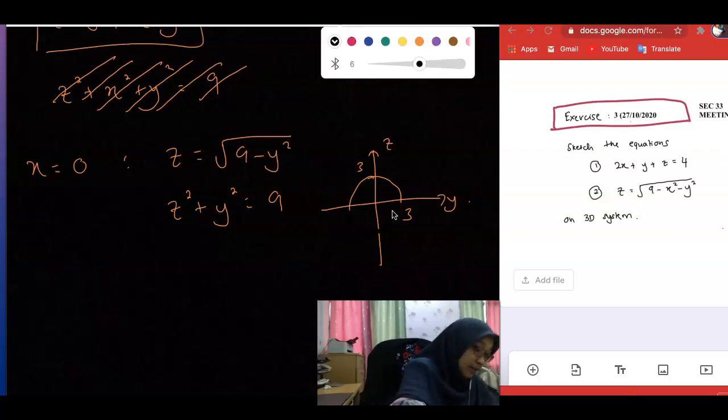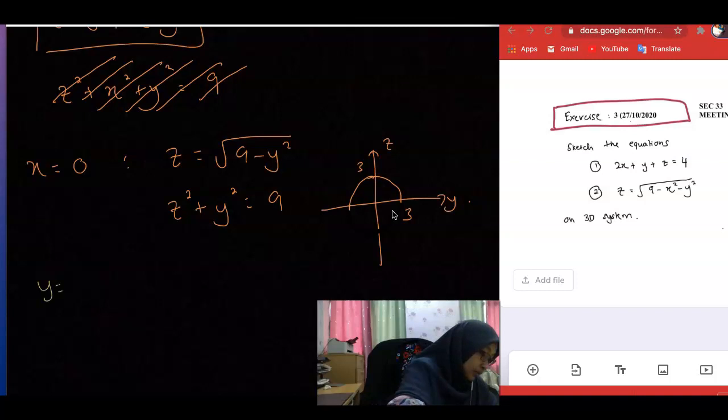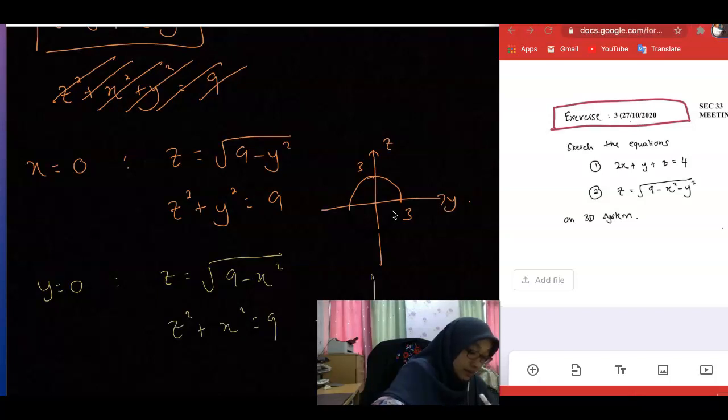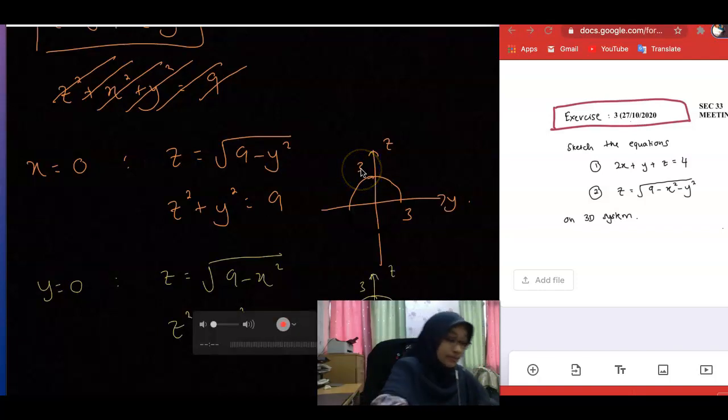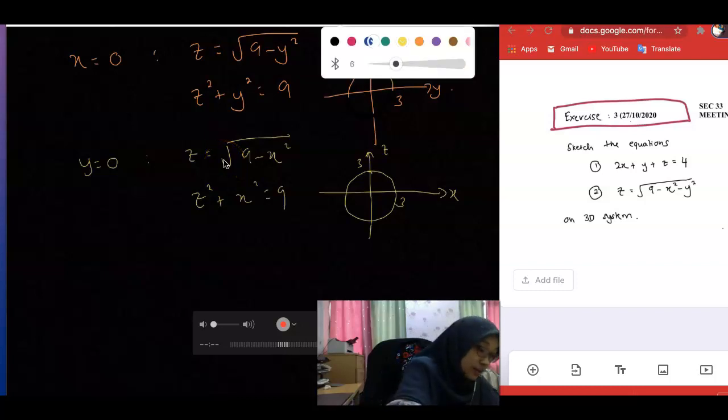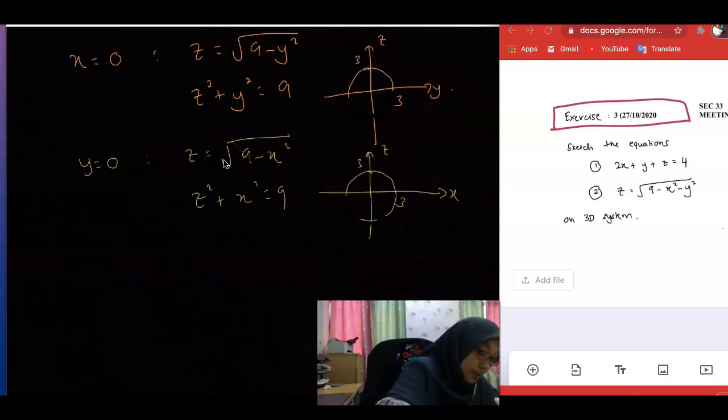Similarly, if you have y equal to 0, we have z equal to square root of 9 minus x squared. After you modify, you will get this equation. And you also have a similar circle on the zx plane. But when you look at the original expression given to you, it only considers z positive. So again, you have to erase the bottom part. We have just half of the circle.